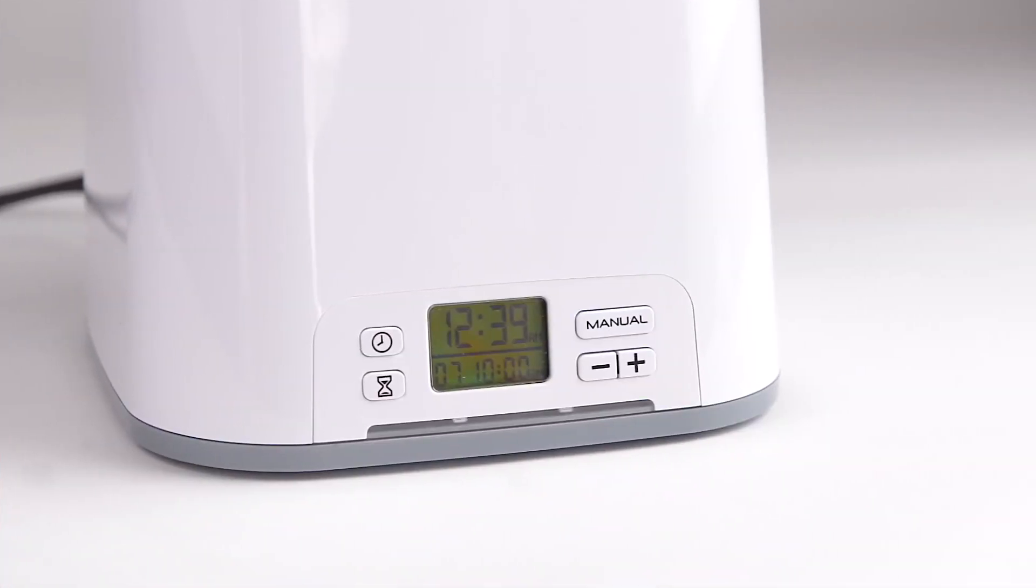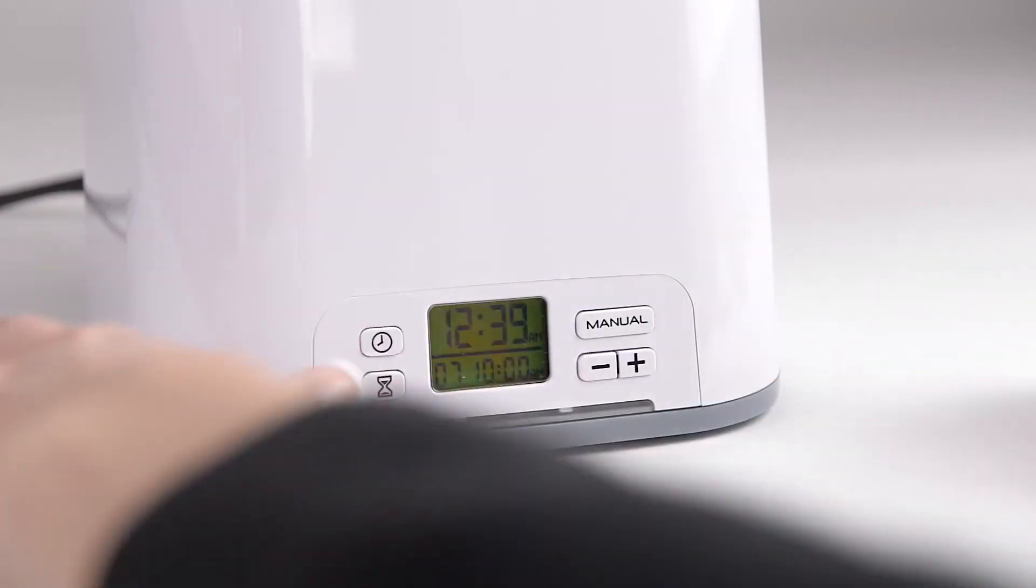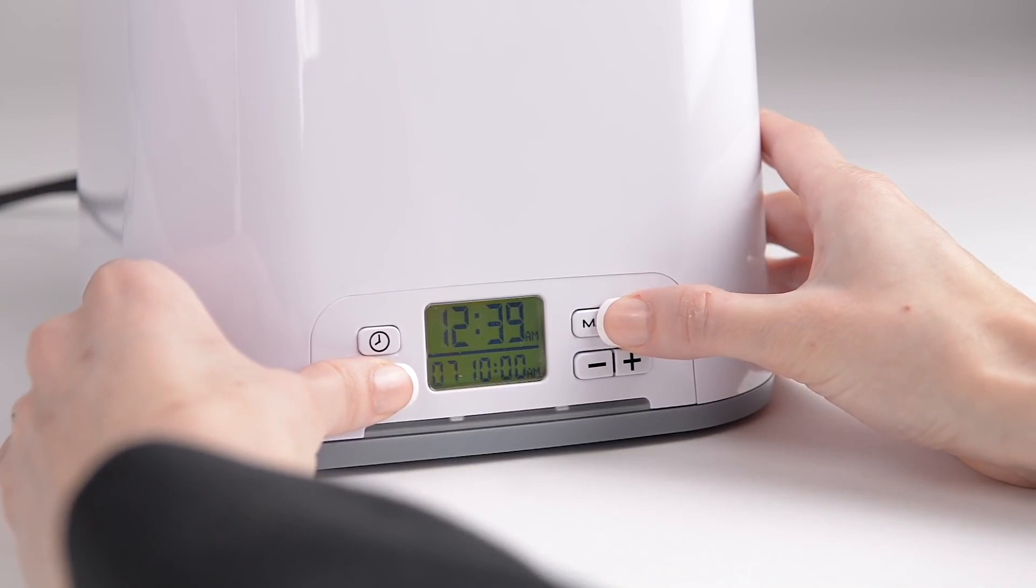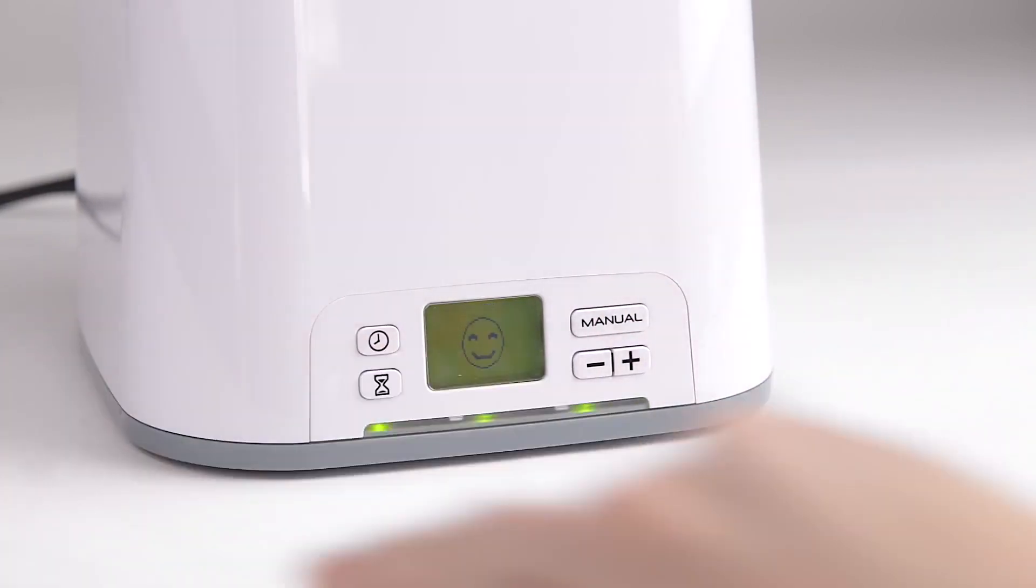Resetting the SoClean should only be done after replacing the cartridge filter and check valve. Press and hold the manual and hourglass buttons simultaneously until you see a smiley face on the display. This means the reset is successful and your SoClean is now ready to use.